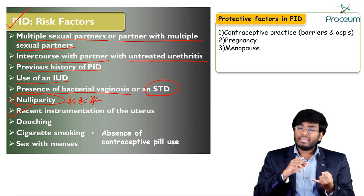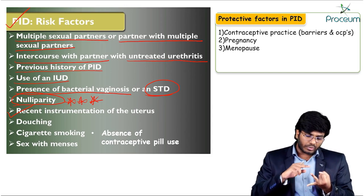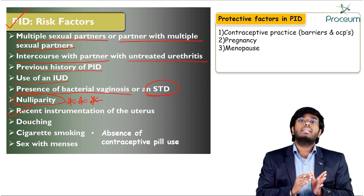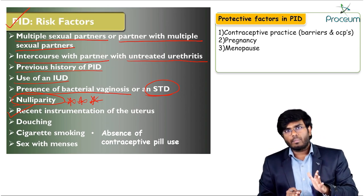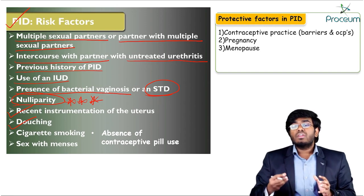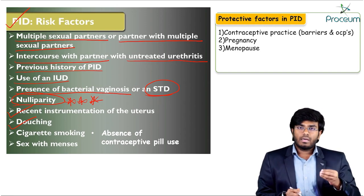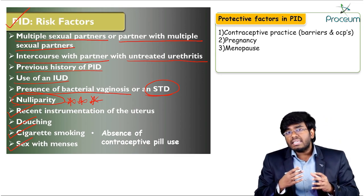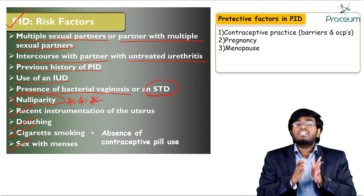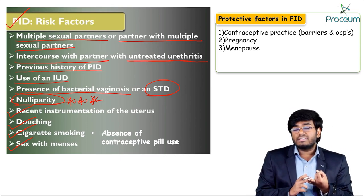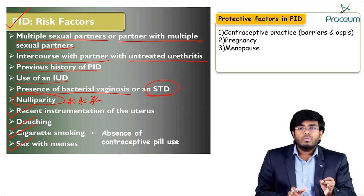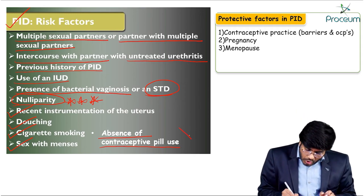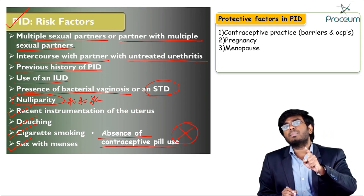Further risk factors include: touching the vagina during menses (which can push ascending infection upward), cigarette smoking, and sex during menses (which increases the risk of STDs like Gonococci and Chlamydia, leading to PID). Absence of contraceptive pill use is also a risk factor.